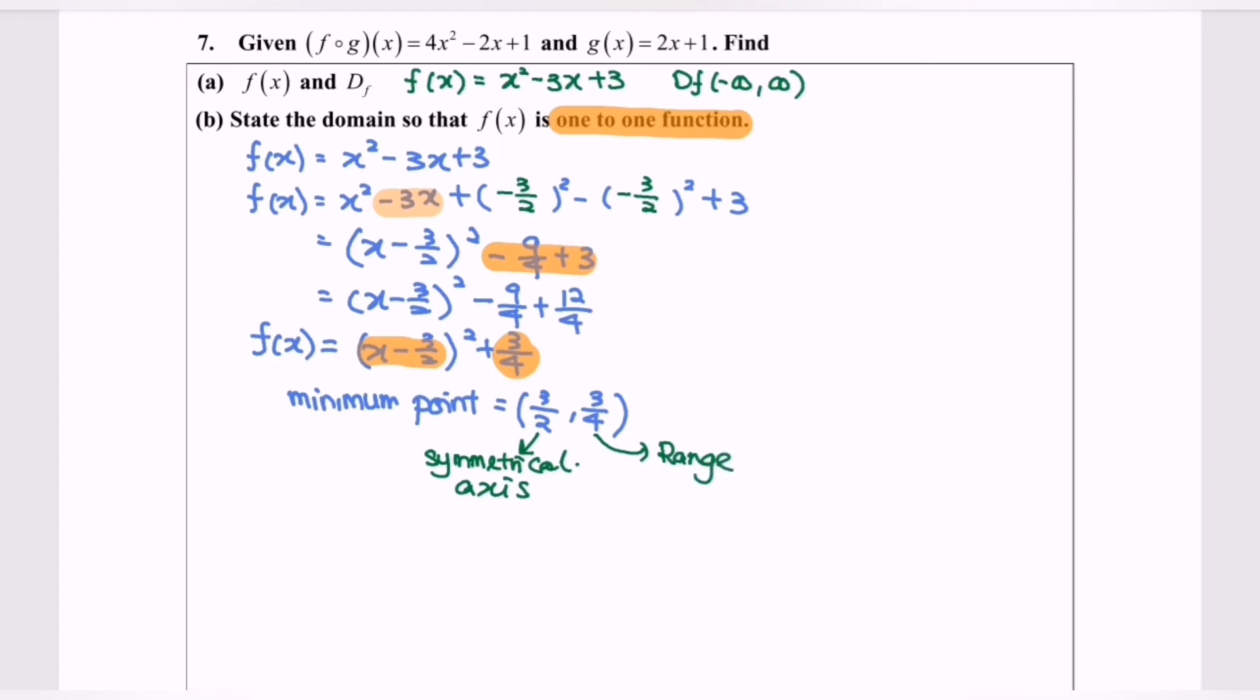So the question asks us to determine or state the domain so that f(x) is one-to-one function. So the domain for f to be one-to-one function would be 3 over 2 until positive infinity.